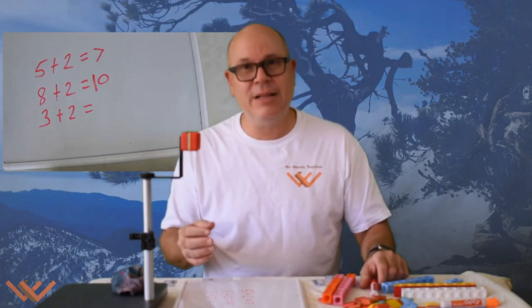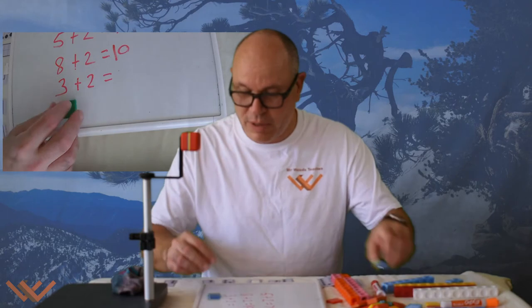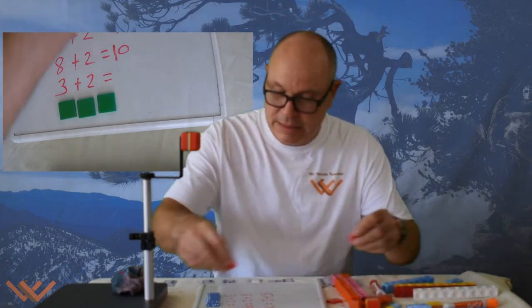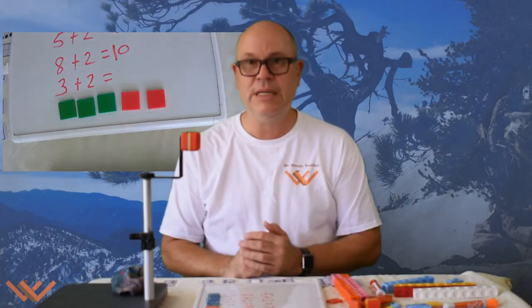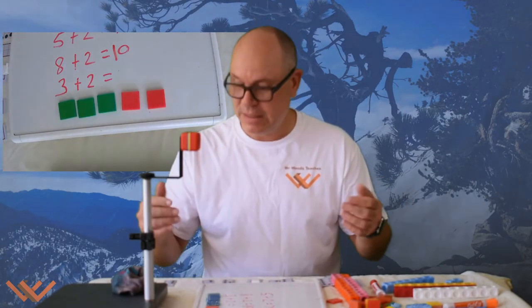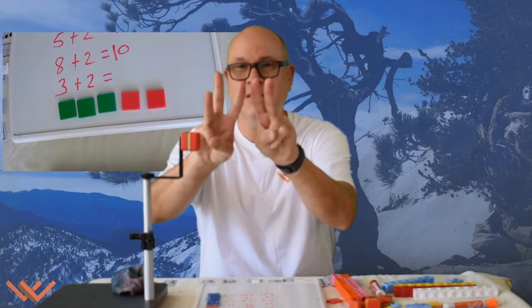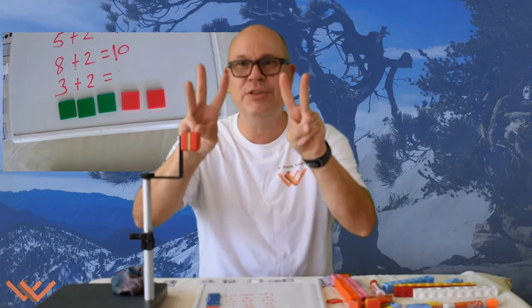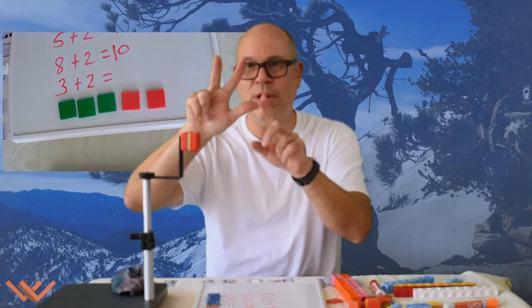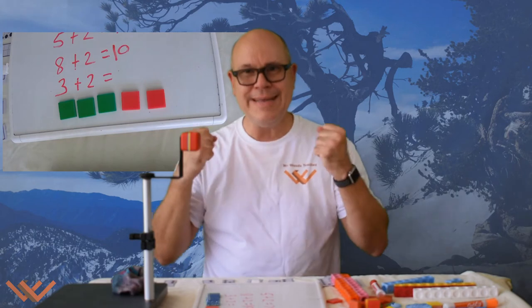I know this is going back a little bit, but let's take a look at three plus two a different way. I have three green blocks and two red blocks. Can you count those up? One, two, three, four, five. Three plus two equals five. Let's do that together: three plus two is equal to five. Three... one, two, three, plus two is equal to five. That's really neat, Mr. Woods! Yeah, I like it too.